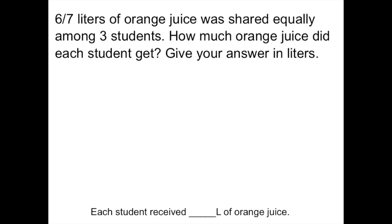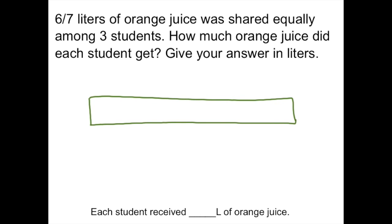On to problem 1B. Six-sevenths liters of orange juice was shared equally among three students. How much orange juice did each student get? Give your answer in liters. My sentence on the bottom says each student received blank liters of orange juice. I'm going to begin by drawing my full bar. This is going to be a part-whole model. I'm told that six-sevenths liters of orange juice was shared equally, so that's the total amount.